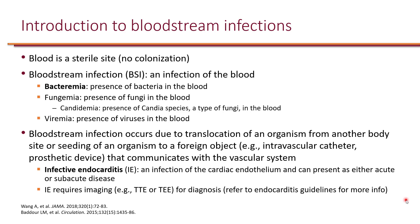It is important to identify where the bacteria is coming from in the blood. This could include seeding of organisms to a foreign object, such as an intravascular catheter, as well as prosthetic devices. Infective endocarditis is a common source of bacteremia — it refers to an infection of the cardiac endothelium and can present as either acute or sub-acute disease. When a patient has bacteremia and the source is not clear, infective endocarditis must always be investigated, especially for gram-positive bacteria.